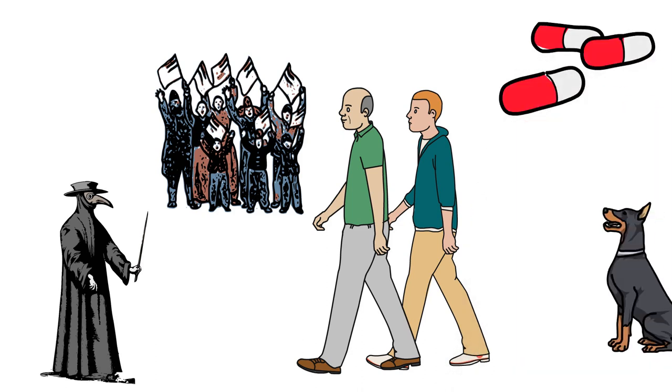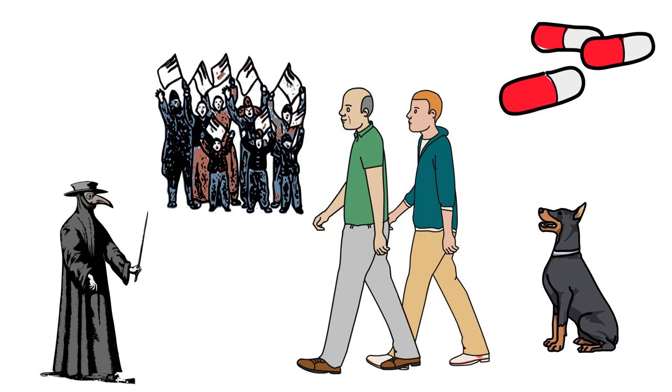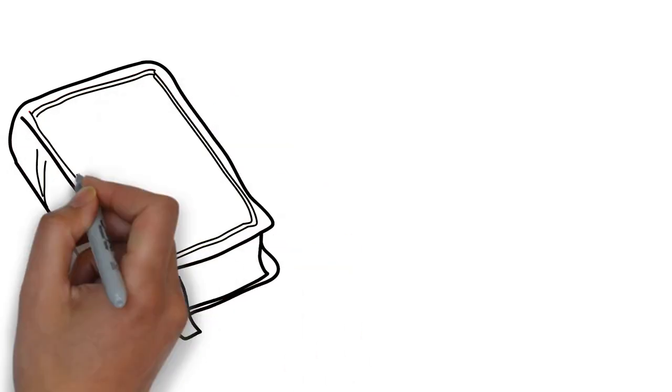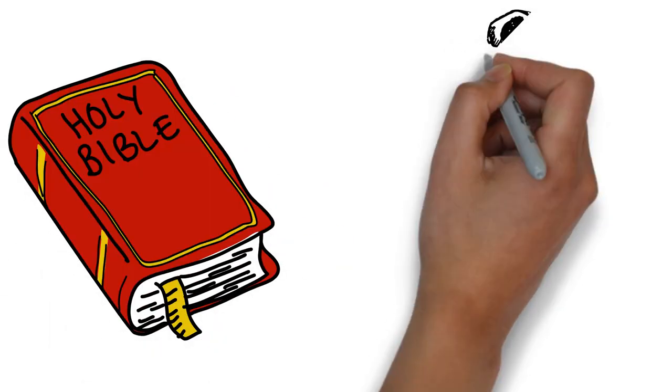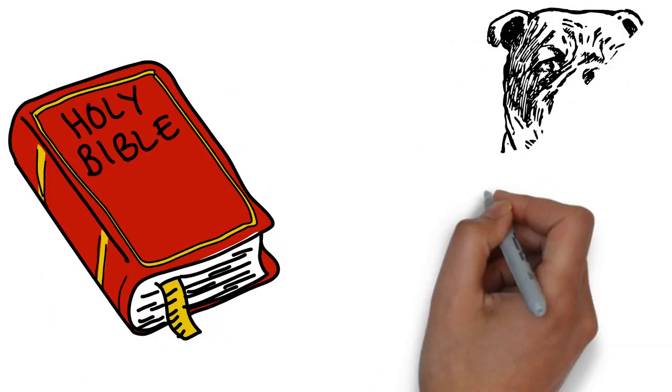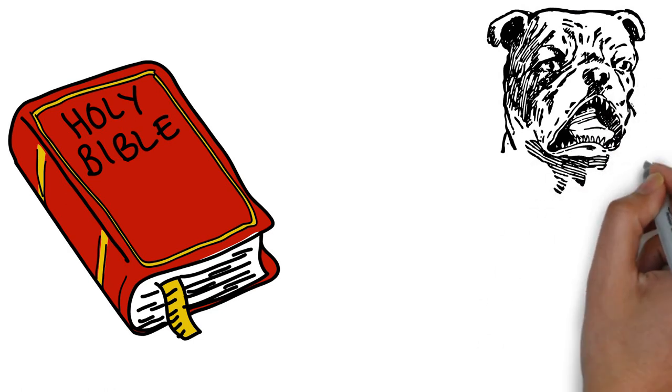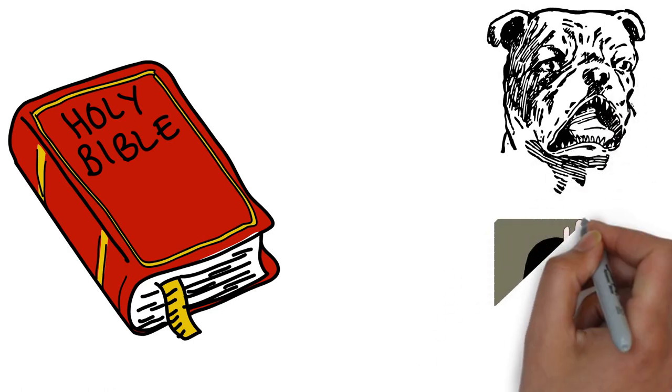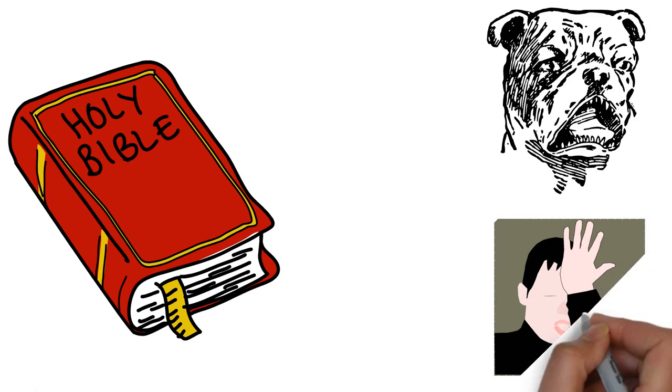As the duo return to their studies, a black dog follows Faust to his room. There he reads the Gospel of John for inspiration, but he's interrupted by the barking dog. The dog transforms into Mephistopheles and they start a conversation about Faust's frustrations.